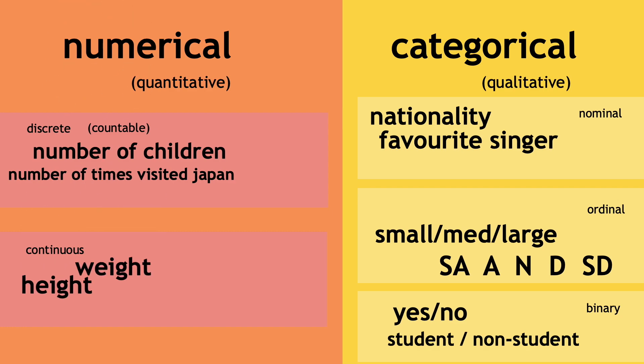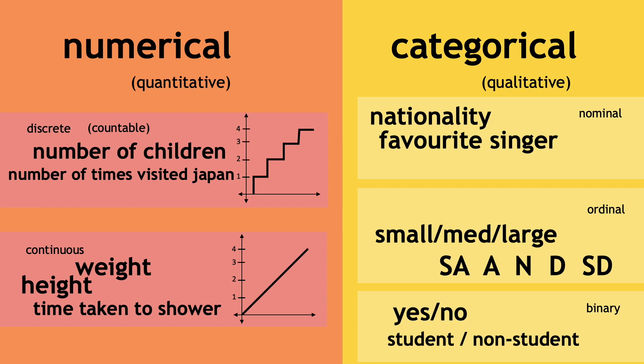Classical examples of continuous data are things like height, weight or time. For any two different heights, there's always a value that makes sense that lies in between. Some people like to think of these two types of variables in terms of a staircase or a ramp. It can get a little philosophical though, because we'll always be limited in the way we measure things, so every continuous variable gets discretized when we measure.